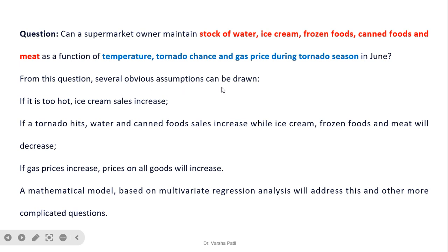From this question, several obvious assumptions can be drawn. Number one, if it is too hot, ice cream sales increase. If a tornado hits, water and canned food sales increase while ice cream, frozen food, and meat will decrease. If gas prices increase, then the price on all goods will increase.